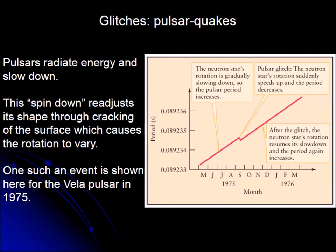Coming back to pulsars: pulsars can radiate energy and as they radiate energy they begin to lose energy, cool down, and slow down. At some point, because of the slowing down, the centrifugal force is going to be less than it was before and there's going to be some rearrangement of the structures of the surface of the neutron star. They can have kind of earthquakes — instead of earthquakes, pulsar quakes.